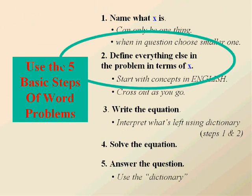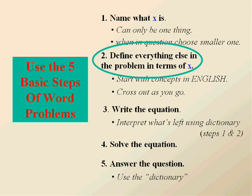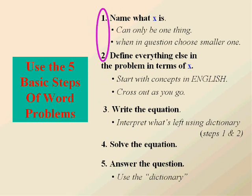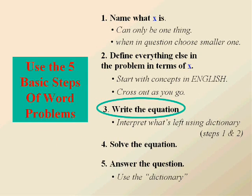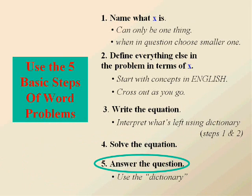Then once you've named what x is, define everything else in the problem in terms of x. And start with deciding what you want to interpret. In other words, start in English and cross out as you go. Because most of the time, if you cross out what x is and what everything else in the problem in terms of x is, all of those are going to add up to what we call the math to English dictionary. And once they're gone, what's left is the equation. Interpret what's left from your math to English dictionary. Then we'll solve the equation and answer the question.